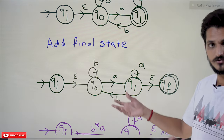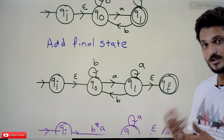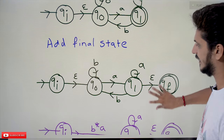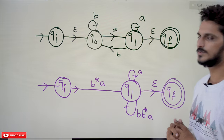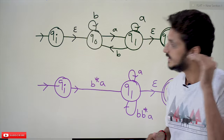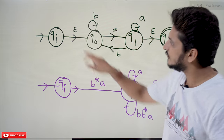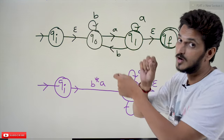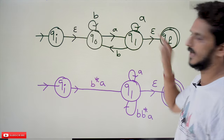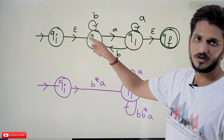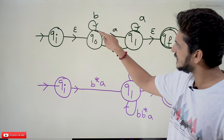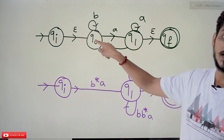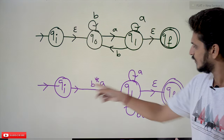We can eliminate Q0 first, then Q1, or Q1 first, then Q0 — either way gives the same answer. Eliminating Q0 first: from QI to Q1, with Q0 in between. From QI, using epsilon we reach Q0, then taking any number of B's (self-loop on B) followed by A, we reach Q1. So the edge from QI to Q1 becomes B*A.